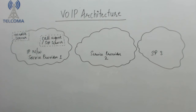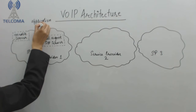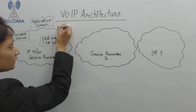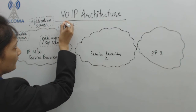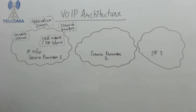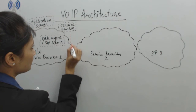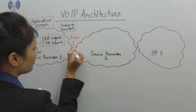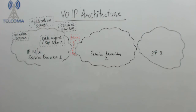Then we have the application server, then the service broker. After that we have the edge routers and other components here.